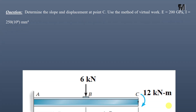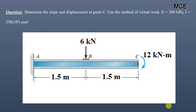Hello and welcome back to Master Civil Engineering. In this video you will learn how to find the slope and displacement of a beam using the method of virtual work. We have been given a steel beam and we have to determine the slope and displacement at point C using the method of virtual work.